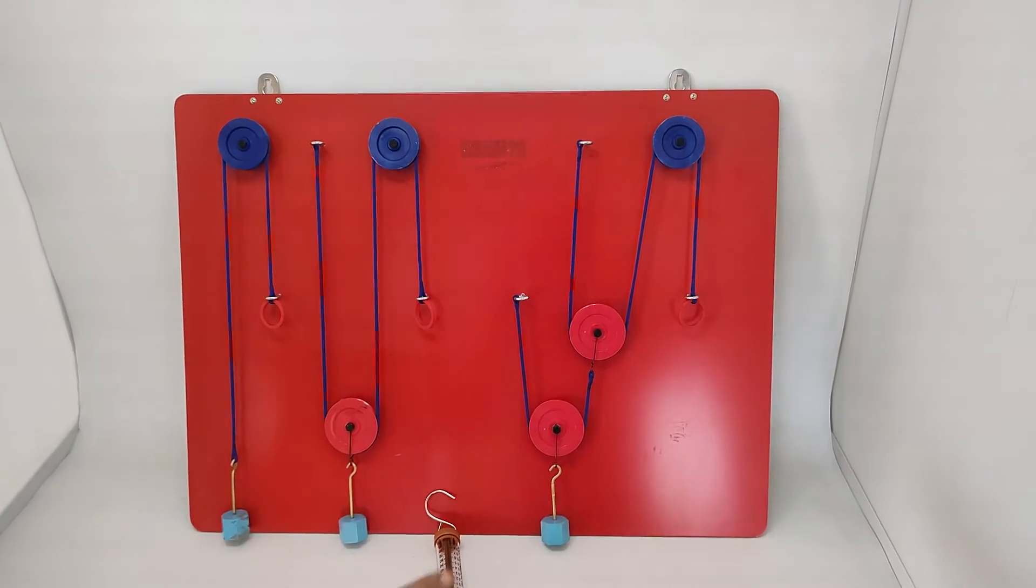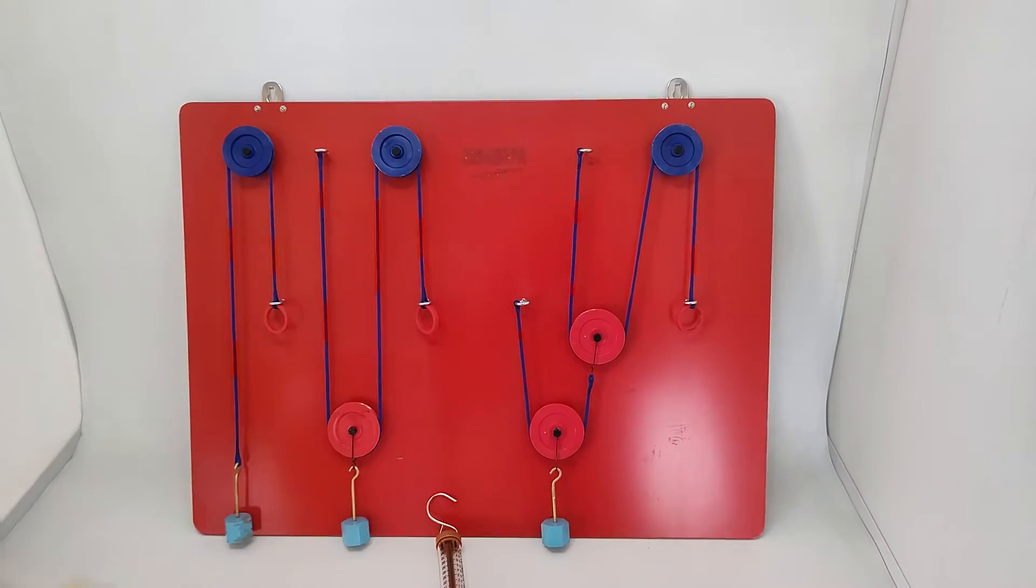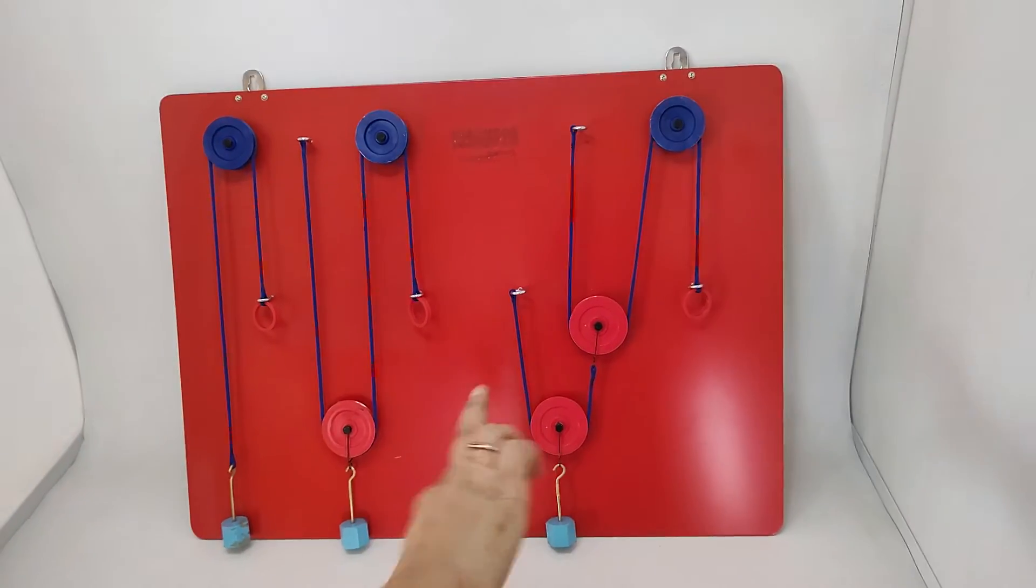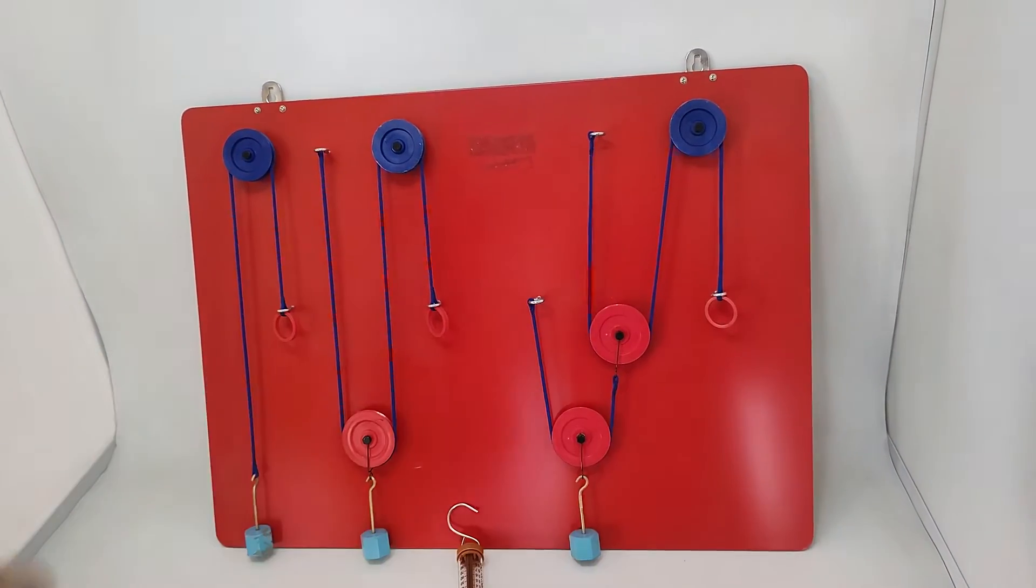In the third set, there are three pulleys. The first pulley is blue and fixed, while these two red pulleys are movable. They will move along the thread.